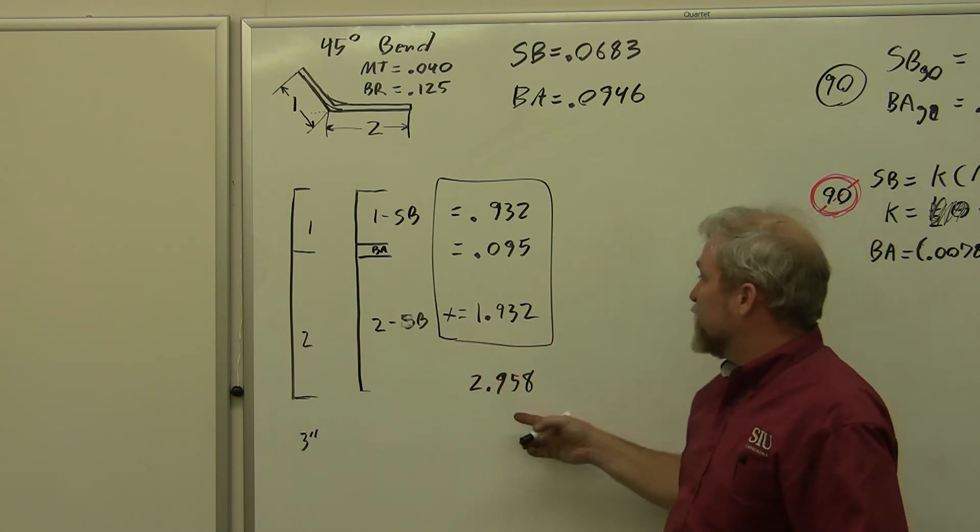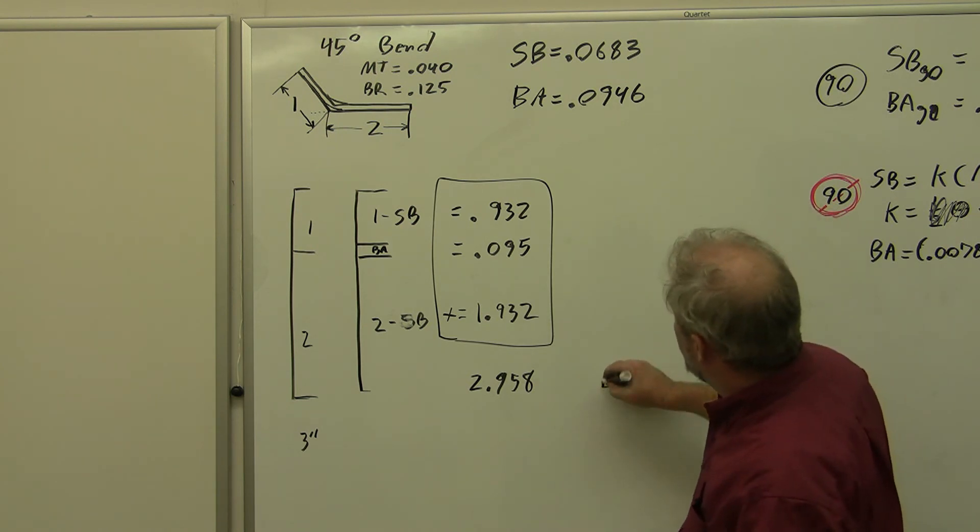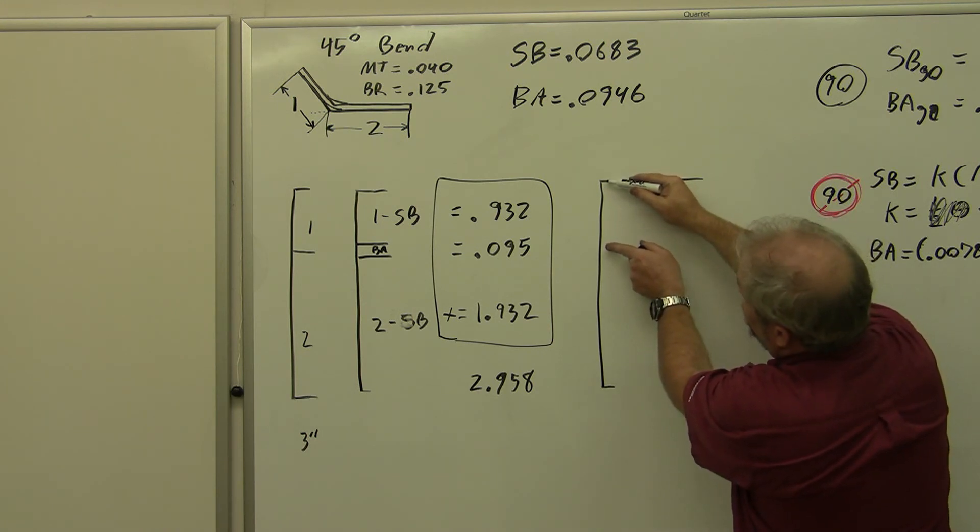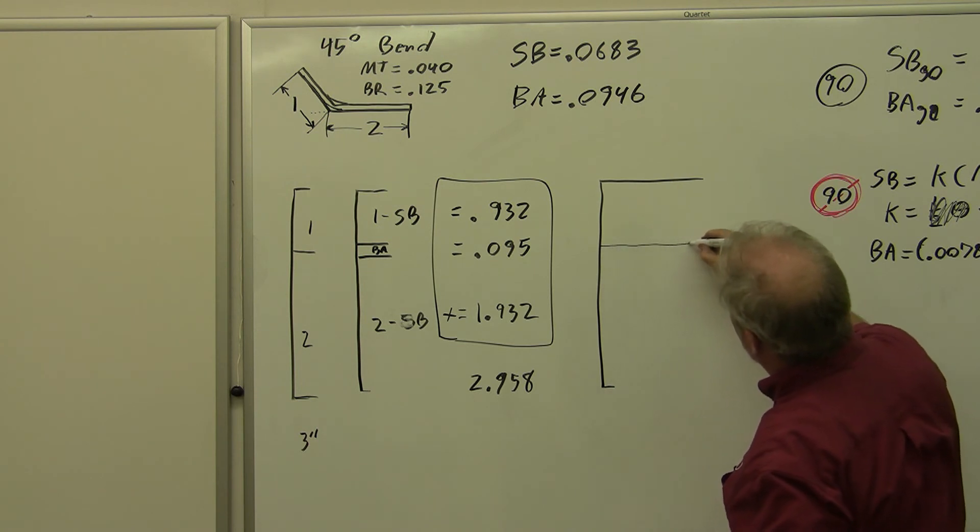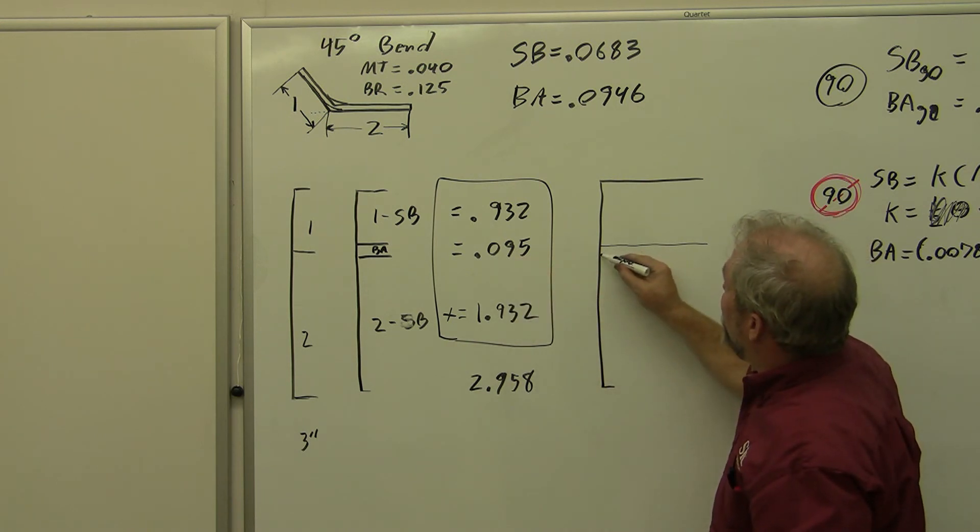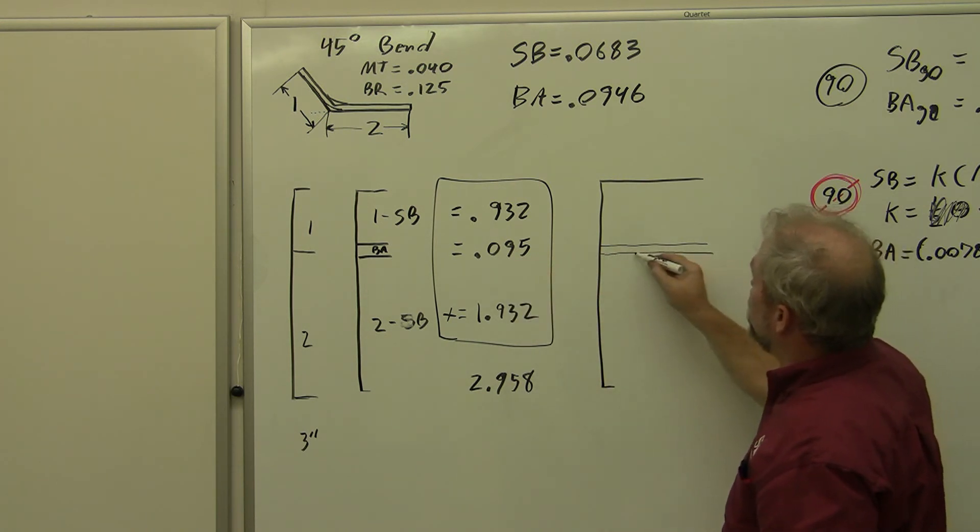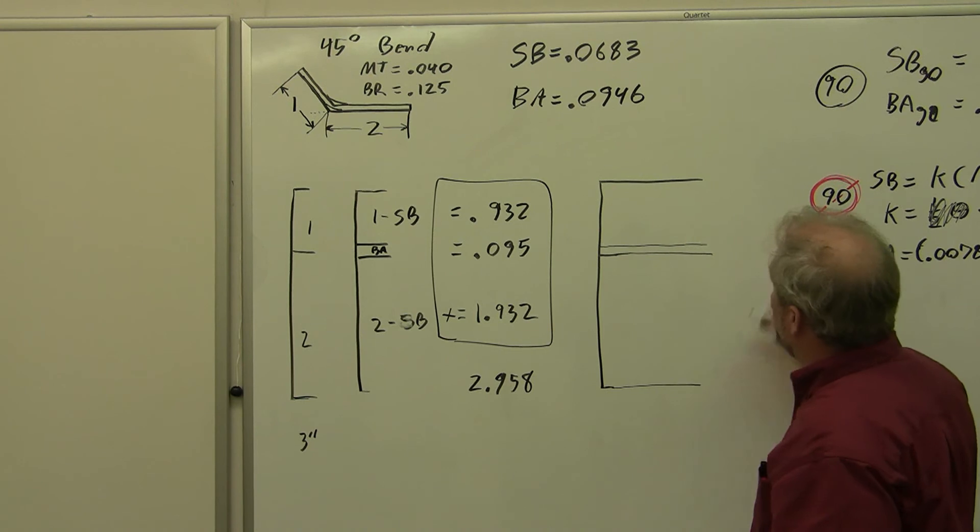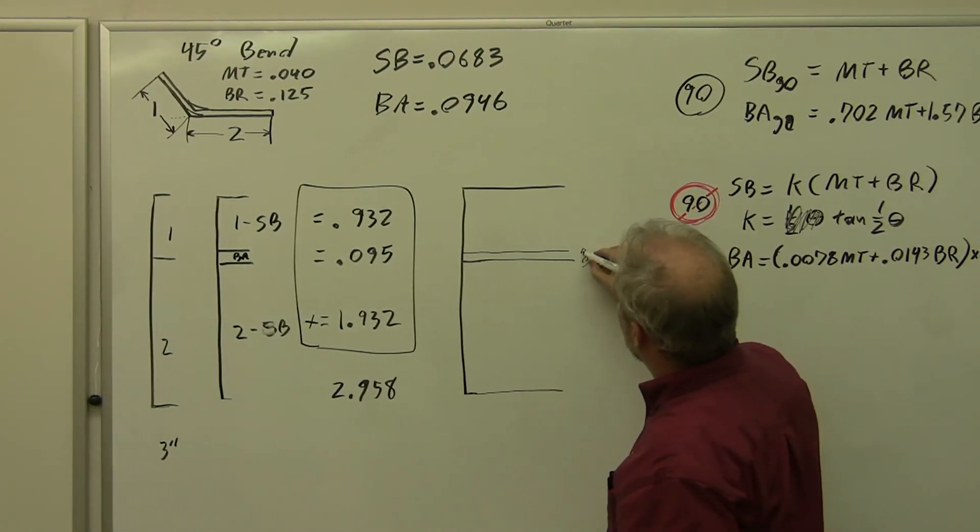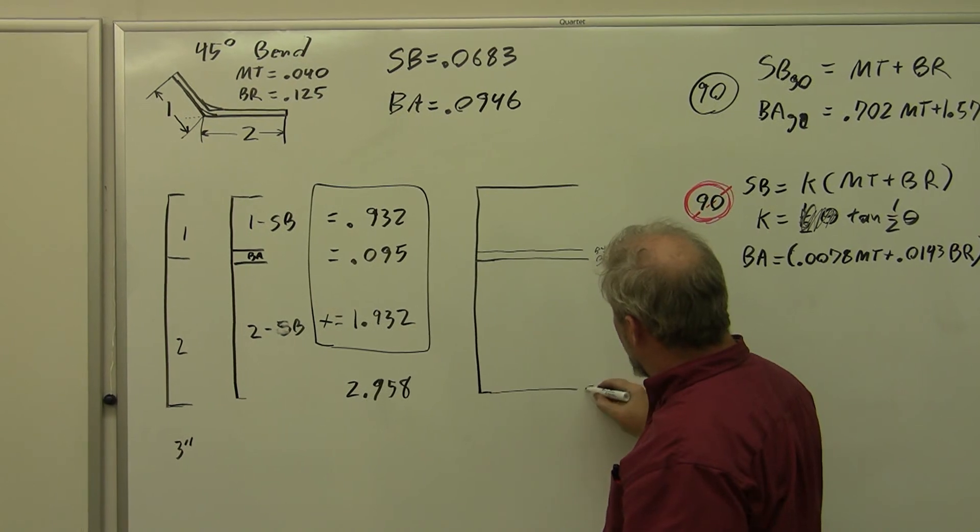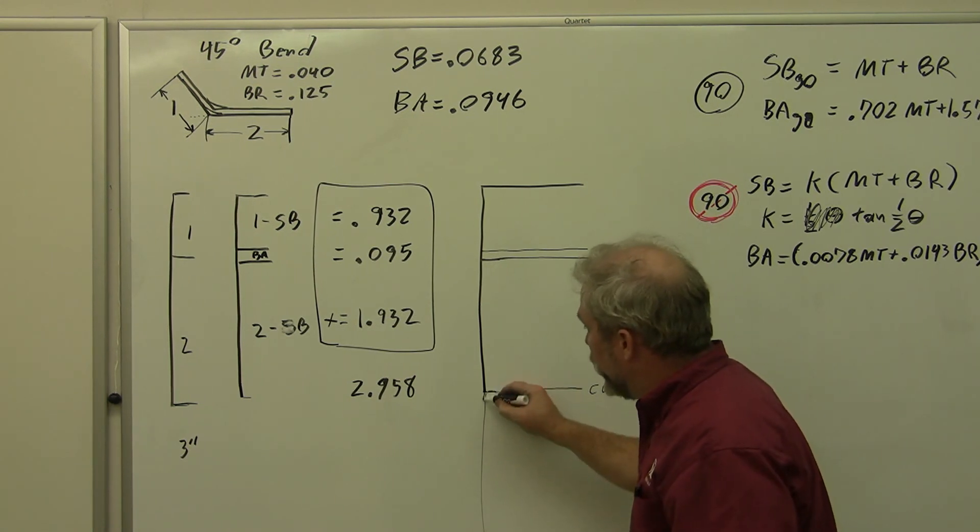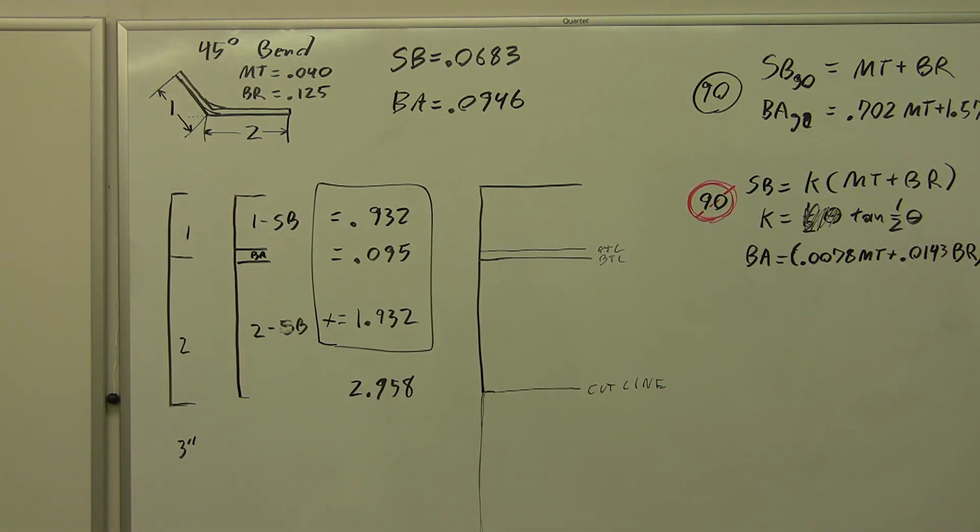But this gives us the total distance that we would need. Now it would be marked over onto our piece of sheet metal. I'm going to use my very precise caliper to measure 0.932 and make my first bend tangent line. Of course, I measured on both sides to make it perfectly parallel. 0.095 is right about here. This is my 1.932. This is my BTL, my other BTL. And this is my cut line where I cut everything. My blank continued on this way before I cut it off.